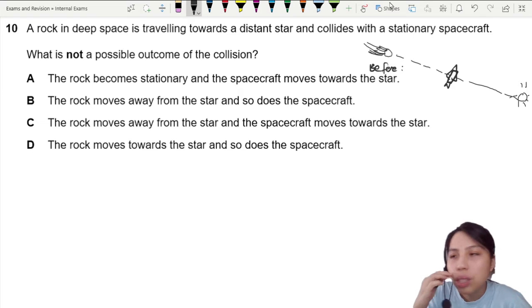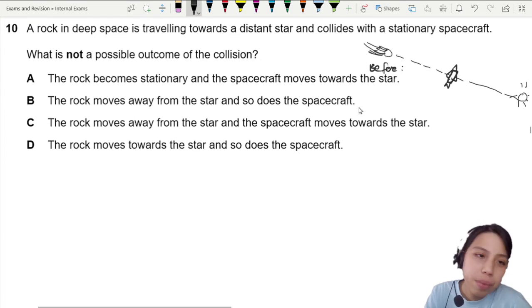So what are the not possible outcomes? Maybe we need to see what is a possible outcome. Let's look at the first one: the rock becomes stationary and the spacecraft moves towards the star.